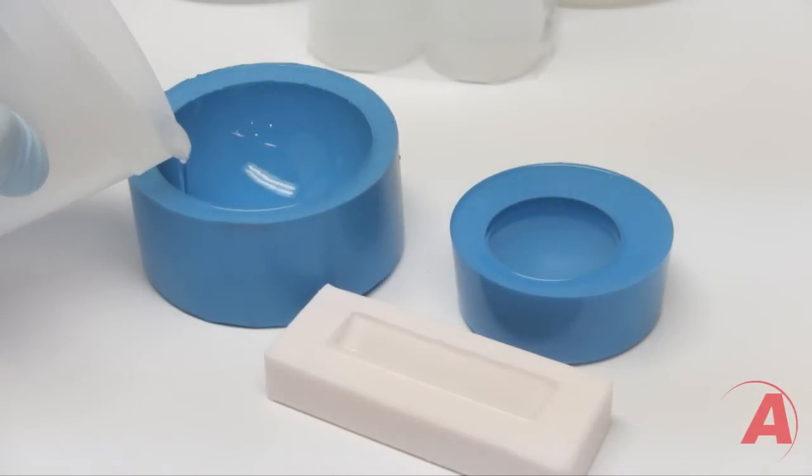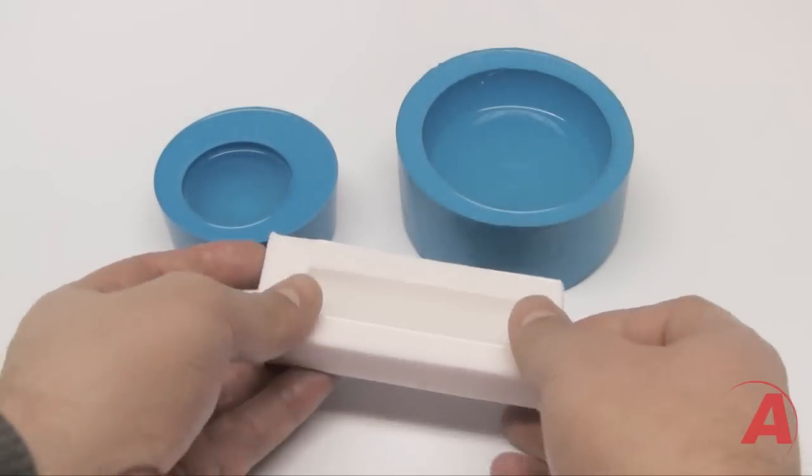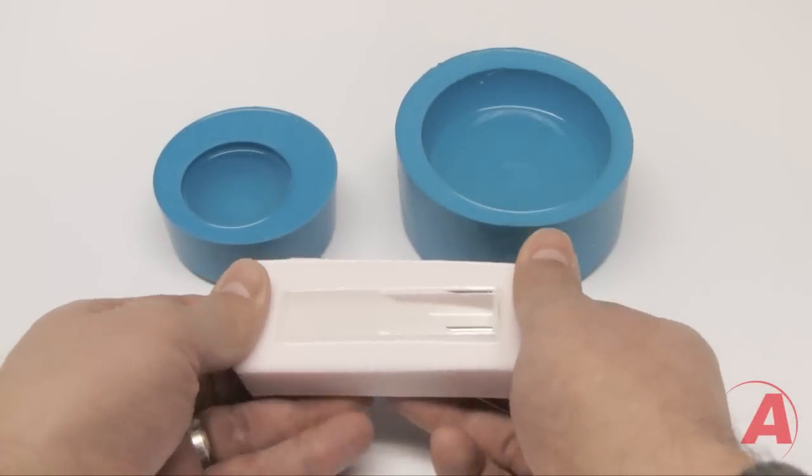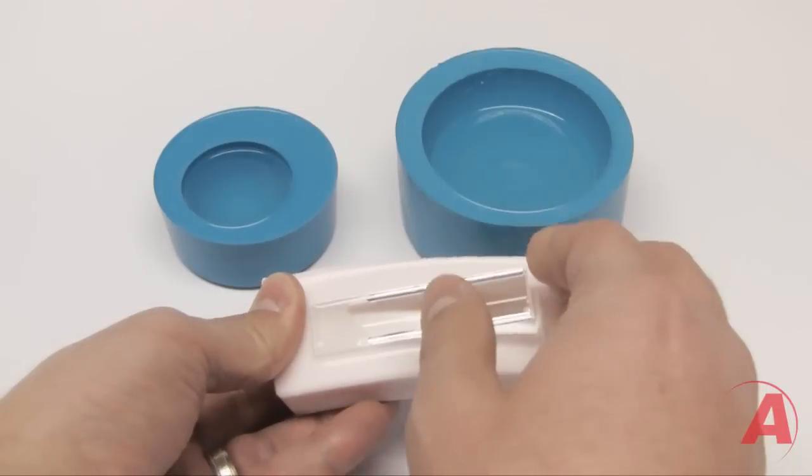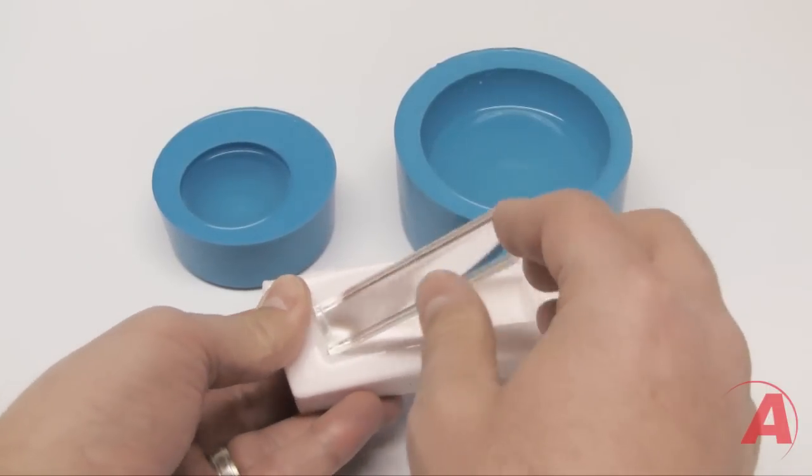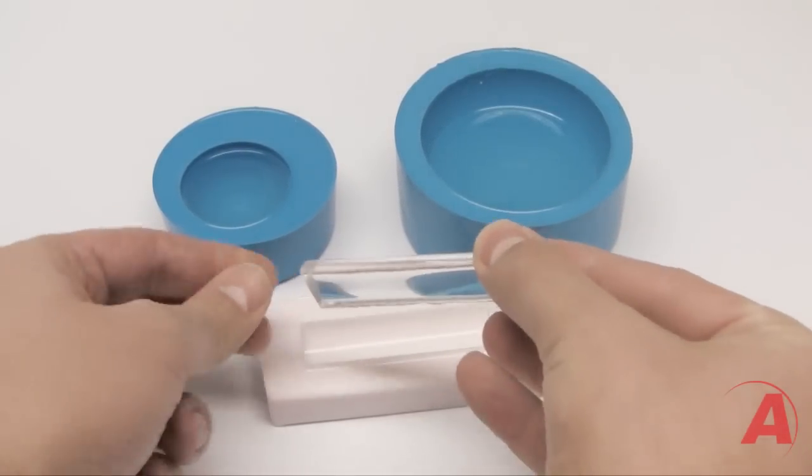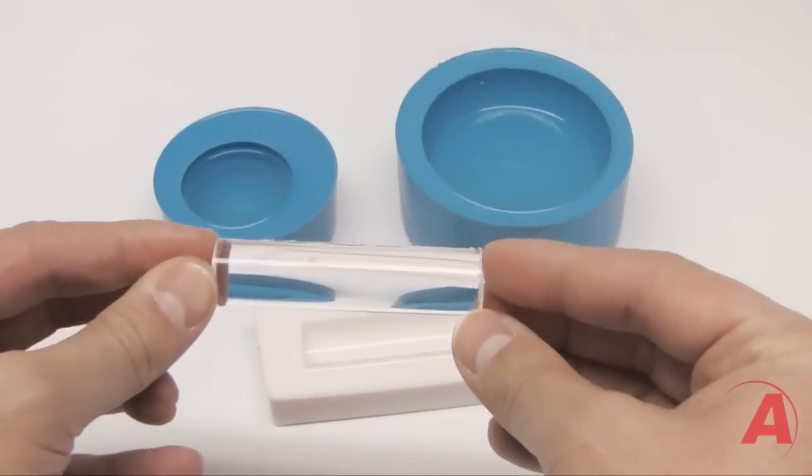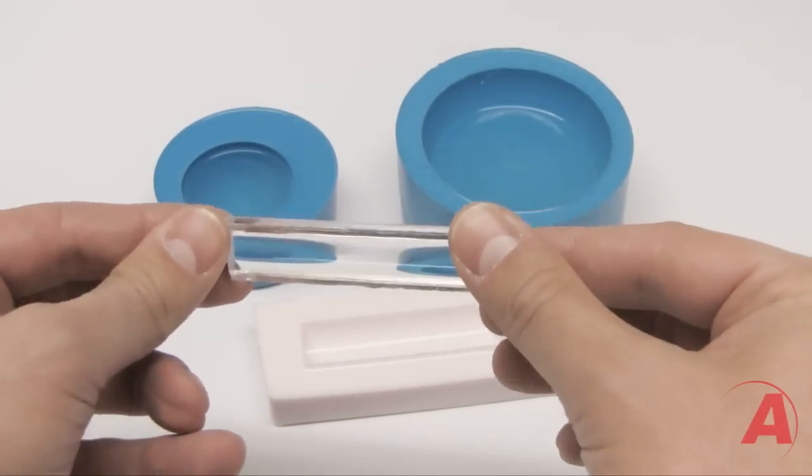Once cured, simply flex the mold and remove your part. As you can see in these three parts, the system produces high clarity pieces. An important note on your molds: the surface quality of your mold is directly related to the clarity of your cast pieces once they cure.